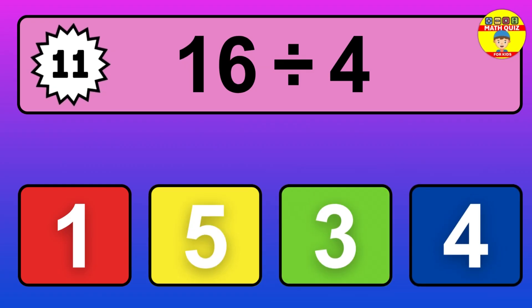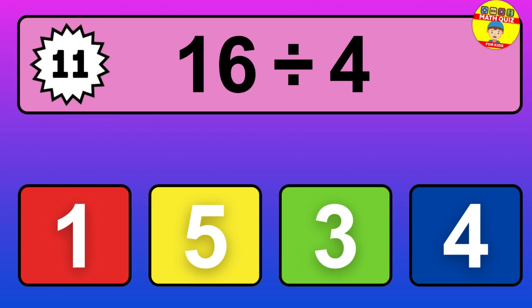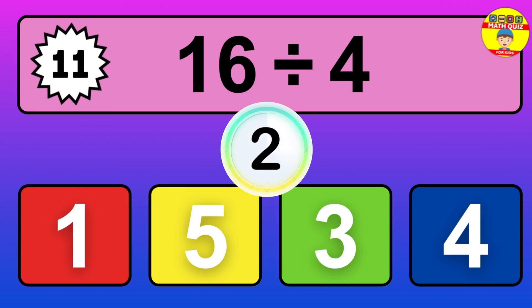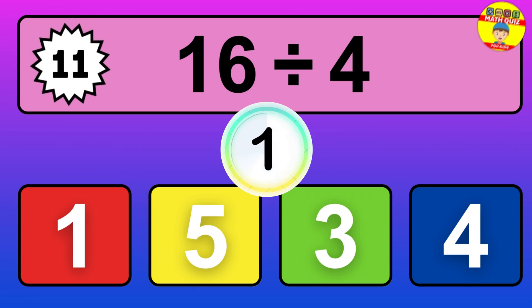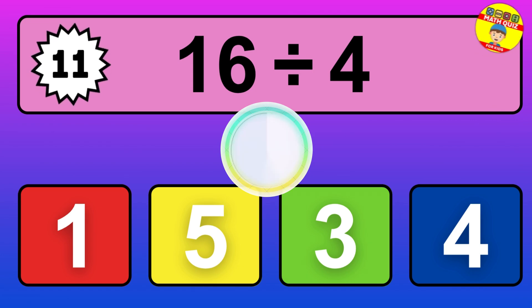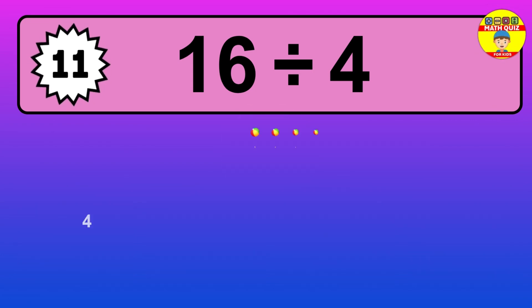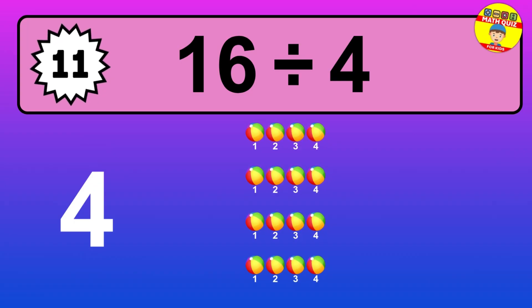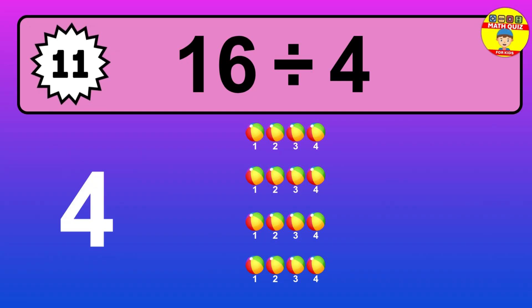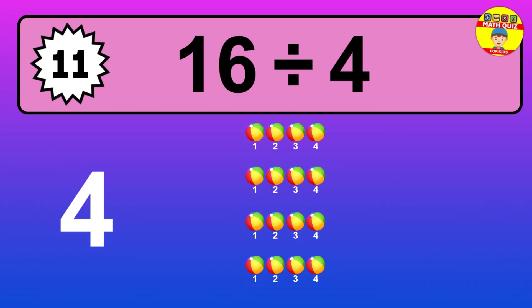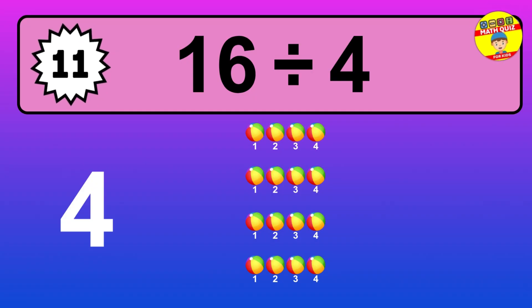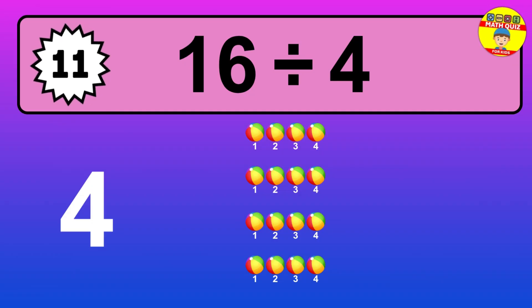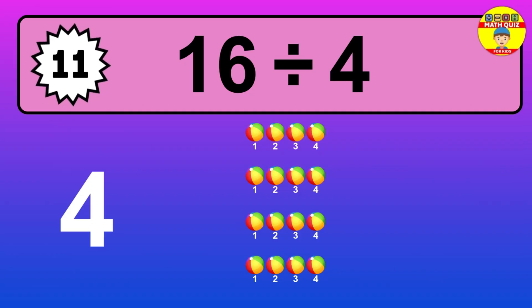16 divided by 4 — it's time to think. Let's go to the solution. Divide the number 16 by 4. Each group contains 4 units, so dividing 16 by 4 results in 4 equal groups. Thus, the result is 16 divided by 4 equals 4.